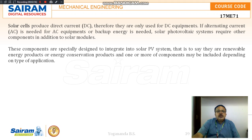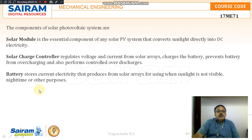These additional components required for AC equipment are specially designed to integrate into the solar photovoltaic system — that is to say, they are renewable energy products or energy conversion products. The components of the solar photovoltaic system are the solar module, solar charge controller, and the battery.